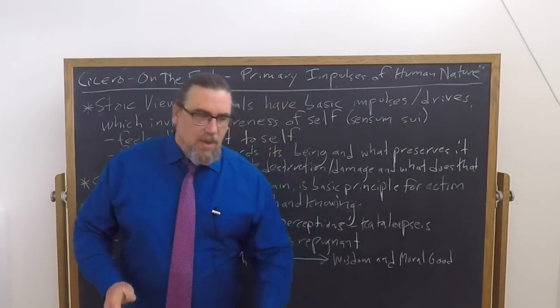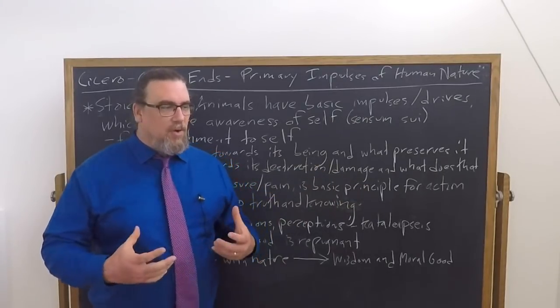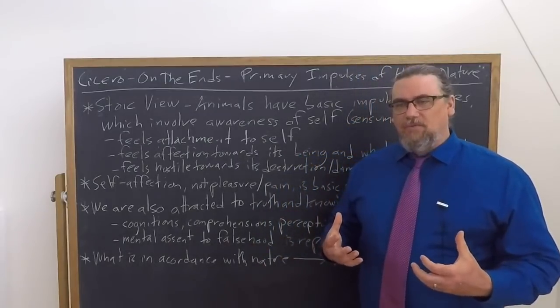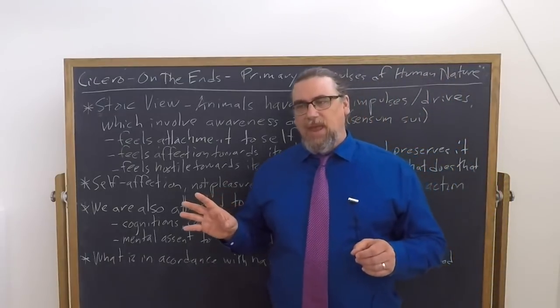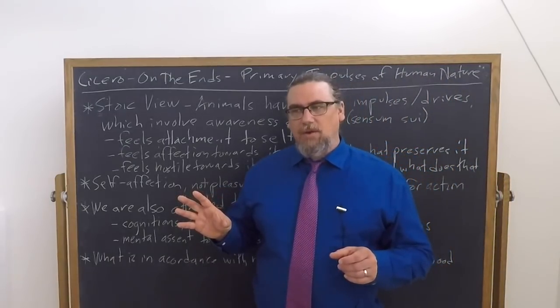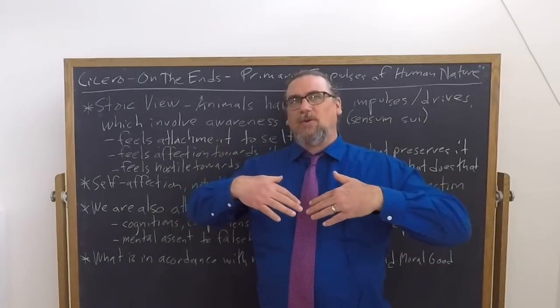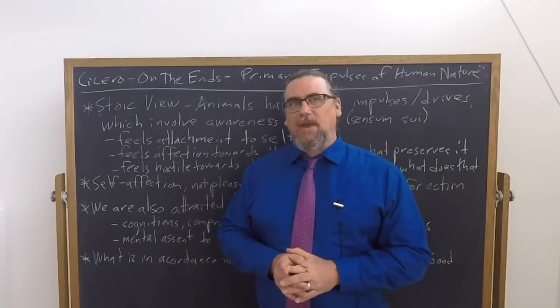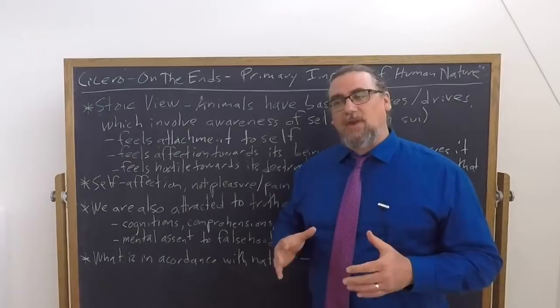One is that the Epicurean representative in the work has already argued that every animal from birth on desires pleasure and avoids pain, and so we can understand all of the things that we're doing in a sort of developmental view as having that as their underlying basis. The Stoics, like many others, reject this and they say, no, there's something different going on.